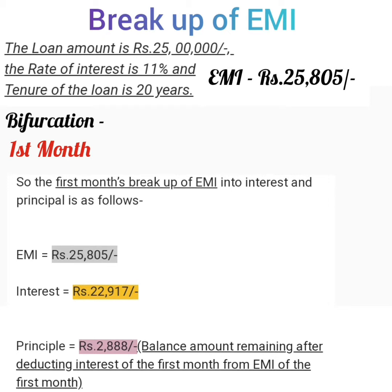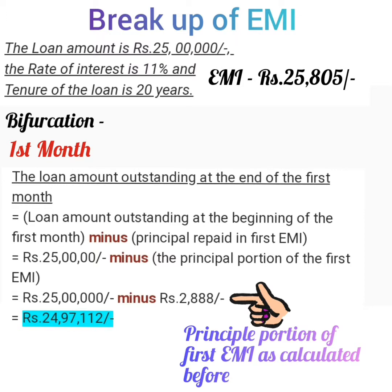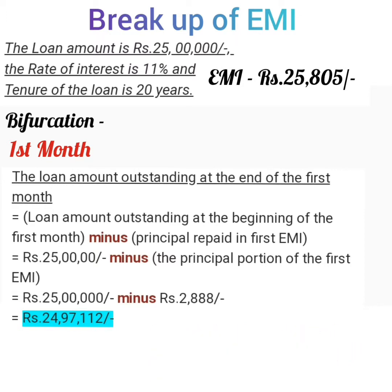So the first month's breakup of EMI into interest and principal is: EMI = Rs 25,805; Interest = Rs 22,917; Principal = Rs 2,888. The loan amount outstanding at the end of the first month equals the loan amount at the beginning of the first month minus the principal repaid in the first EMI, which is Rs 25,00,000 minus Rs 2,888, equaling Rs 24,97,112.